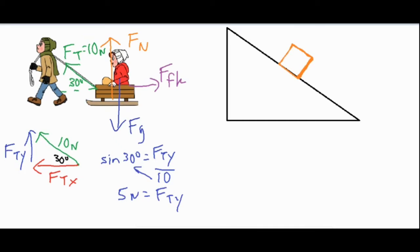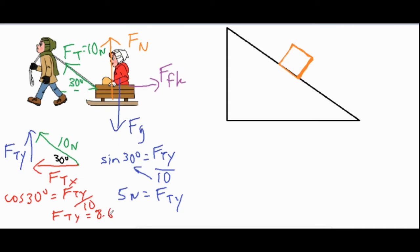For the x component, ftx is adjacent to the 30-degree angle, so we use cosine: cosine of 30° = ftx / 10. Multiplying both sides by 10 gives us ftx = 8.66 newtons.